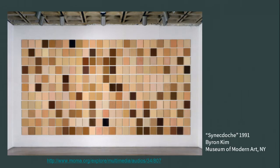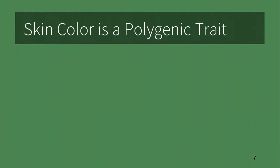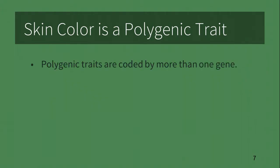What other possibility is there? The trait must be polygenic — a trait determined by more than one gene. To get the variety of skin tones as seen in the painting, there must be several genes for skin color. We will limit it to three genes: A, B, and C.